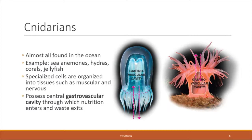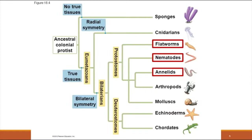Cnidarians are a little more sophisticated than sponges because they have specialized cells organized into proper tissues like muscular tissue and nervous system tissue. They do not have a full and complete digestive system, but they do have a central gastrovascular cavity — a chamber into which nutritional material enters and through which waste exits. Essentially, food goes in and comes out that same hole.